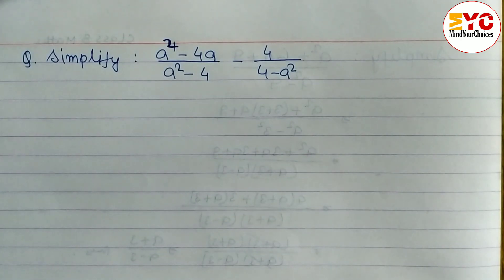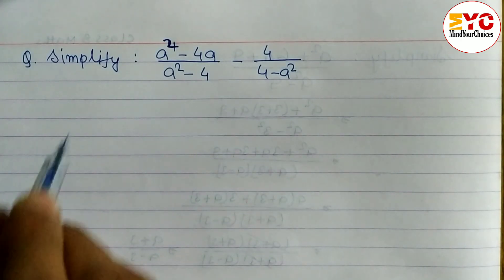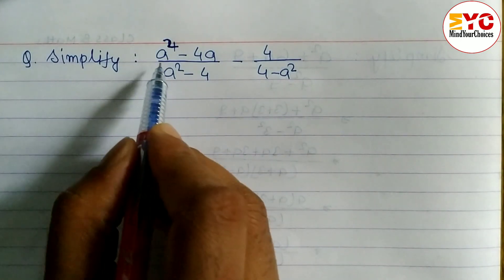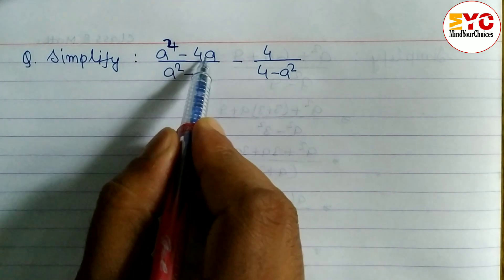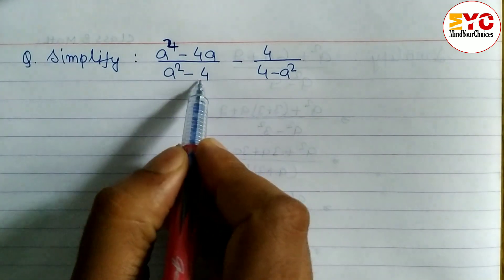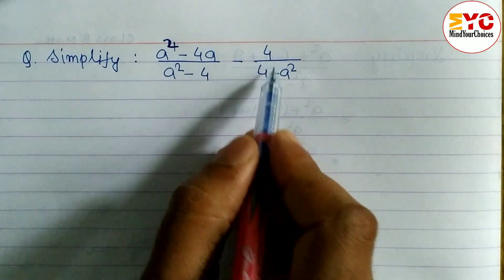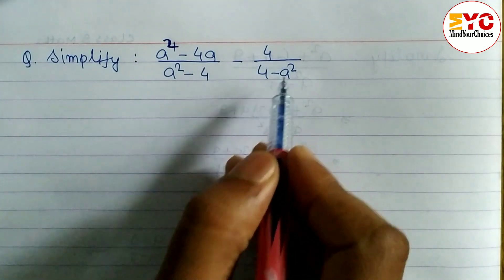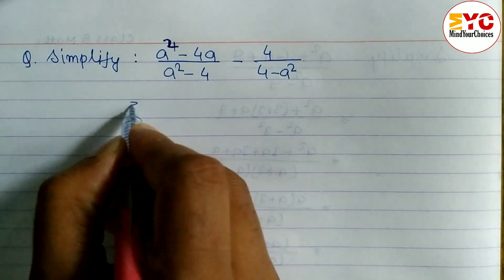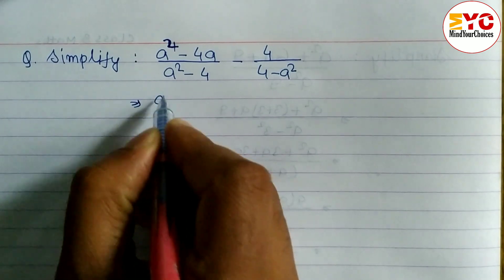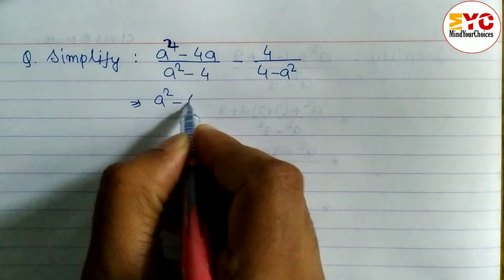In this video we will learn how to simplify. We have a question: a squared minus 4a by a squared minus 4, minus 4 by 4 minus a squared.